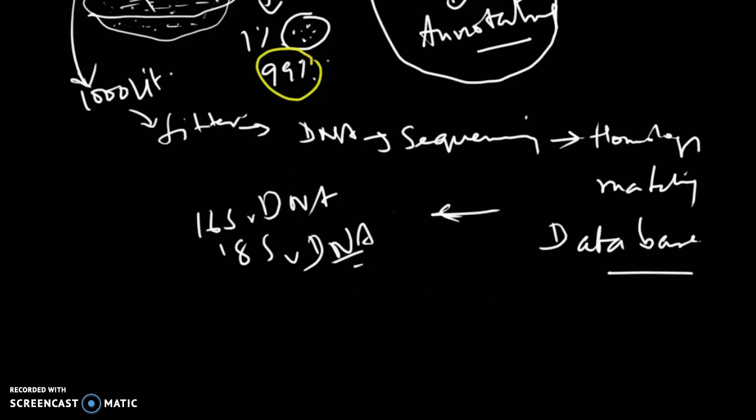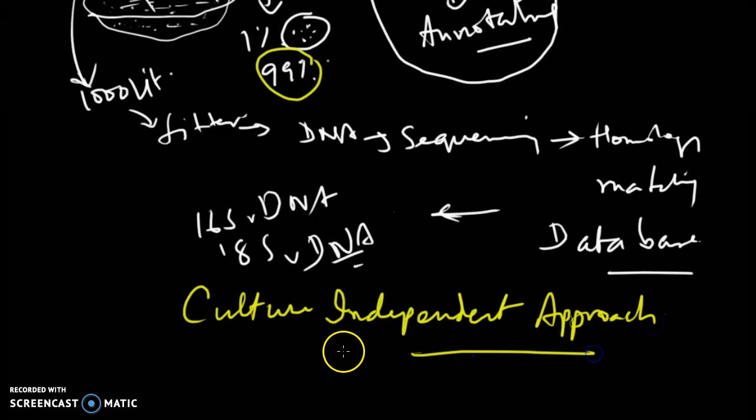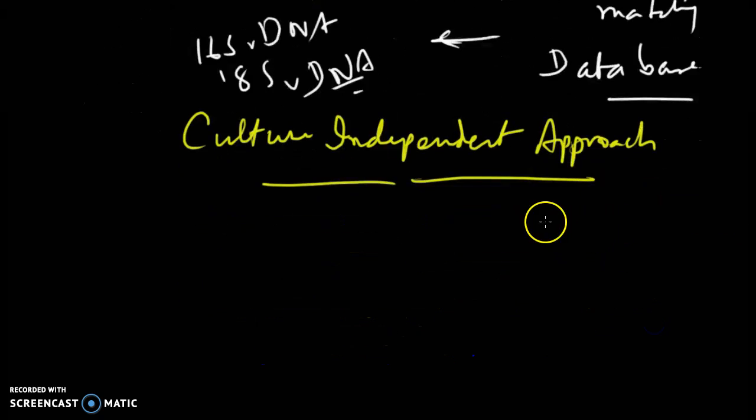Metagenomics is a culture-independent approach where you don't need to have a culture of the organism, as you don't know the exact nutrient requirement of the organism.